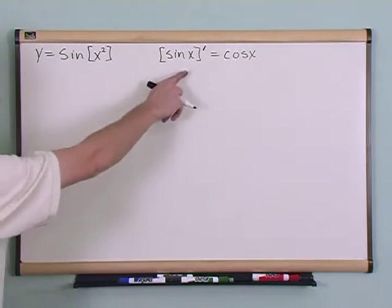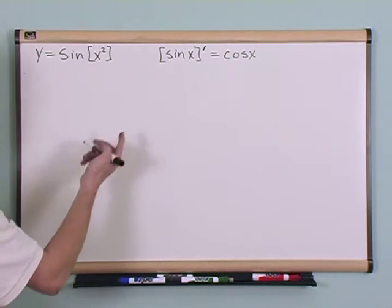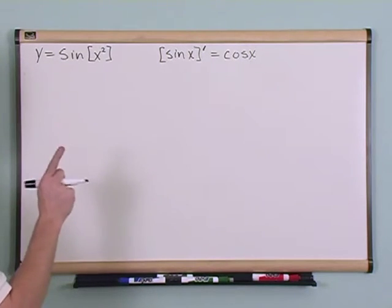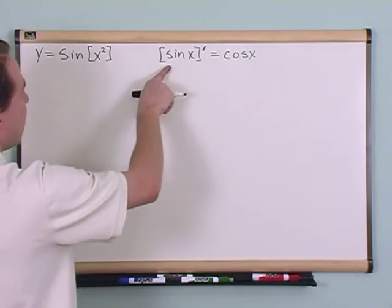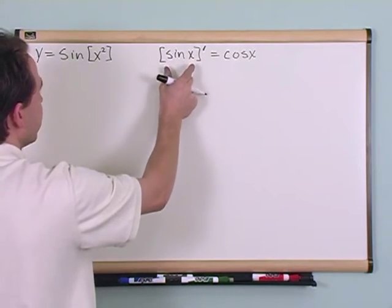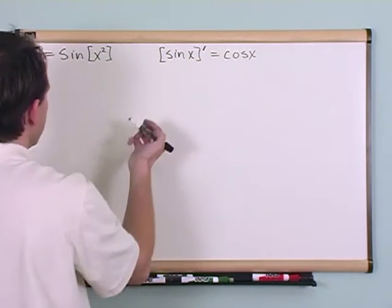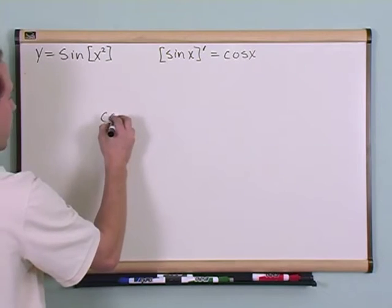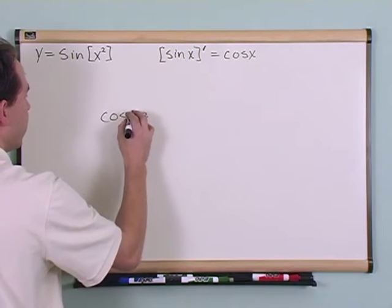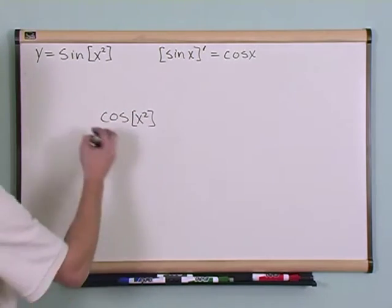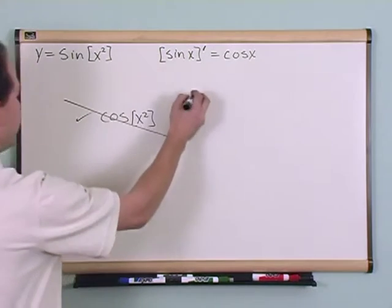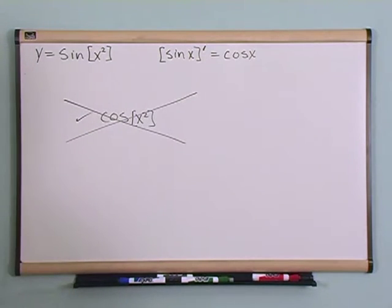But, this is not the same thing as this. You can't just sit here and say, this is the trap. You've got to make sure you don't fall into the trap. You can't look at this and say, well, since the derivative of sine is cosine, well, then the derivative of sine x squared is just cosine x squared, like this. That's it. That's the derivative. No. Absolutely wrong. You cannot do that.